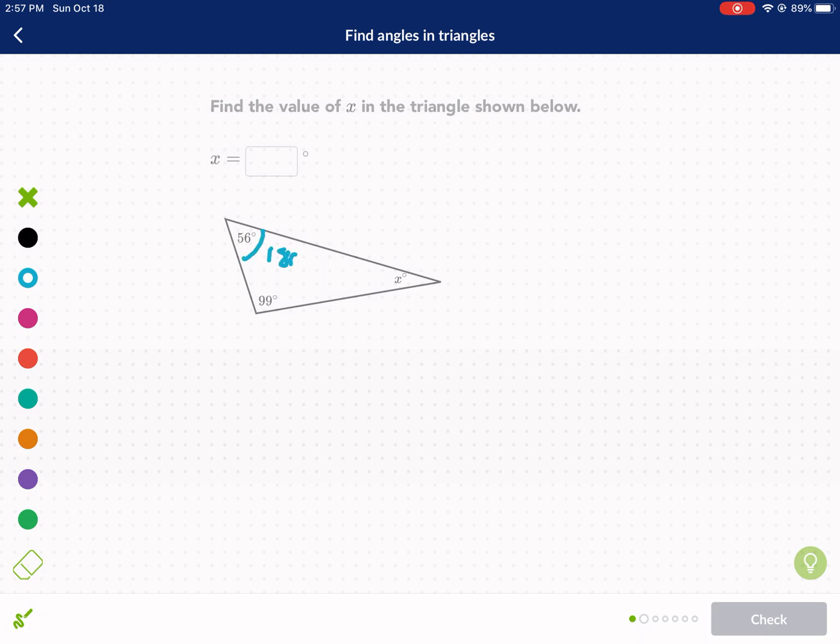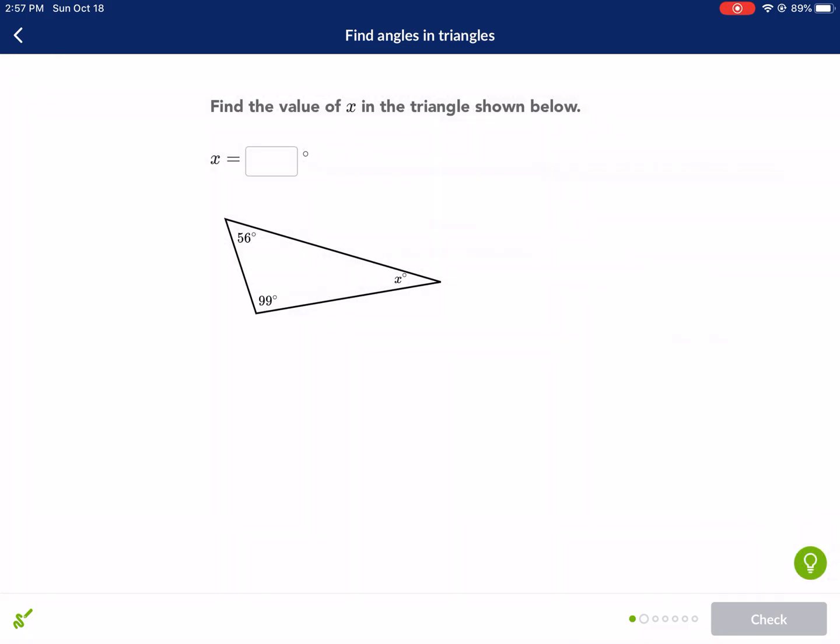So I'm just going to do 180 on my calculator minus 56 minus 99. I'll write that out just so you see what I'm doing: 180 minus 56 minus 99, and I get my total which is 25 degrees. So another small acute angle here, 25 degrees. Okay, let's see if these get any harder.